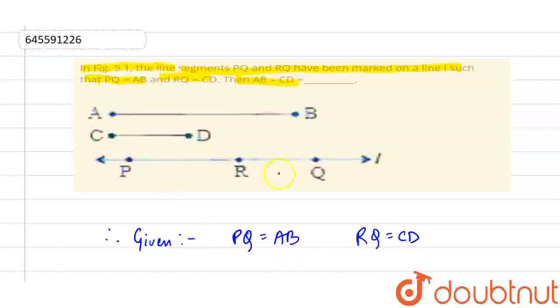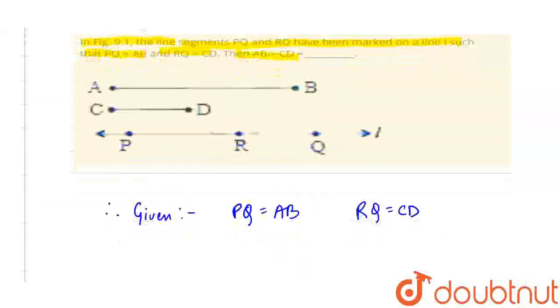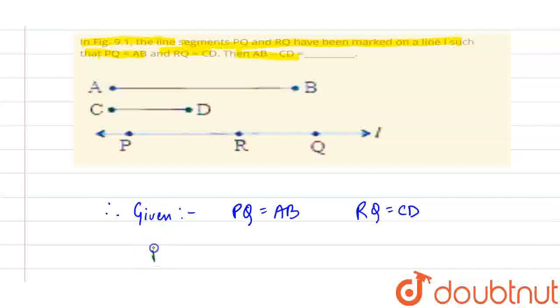Now, how can we solve this? PQ is equal to PR plus RQ.